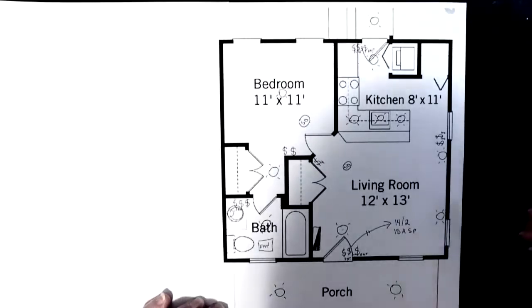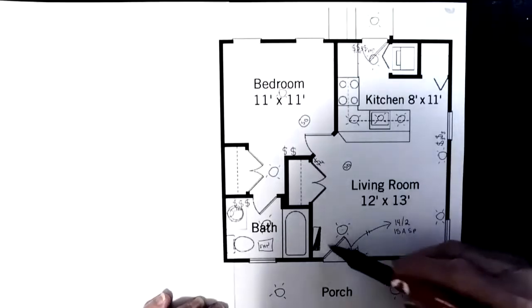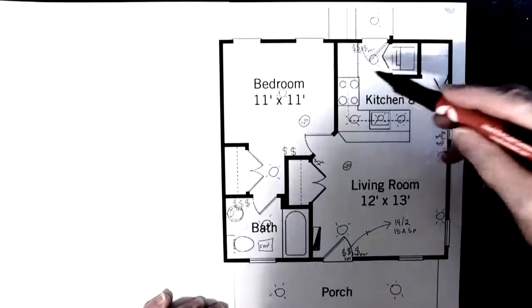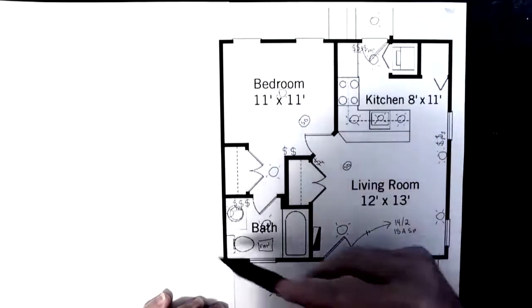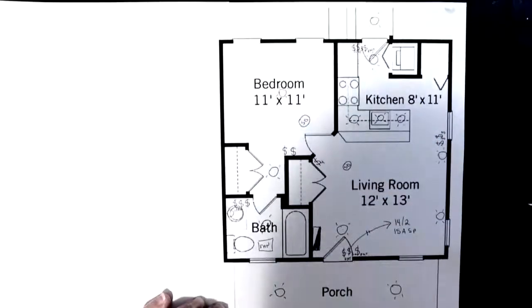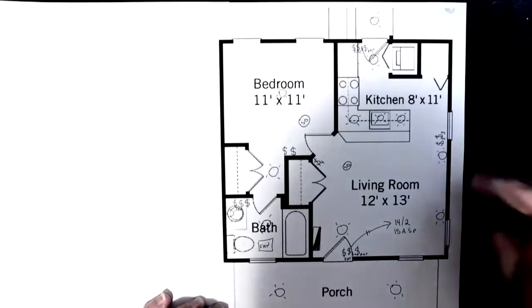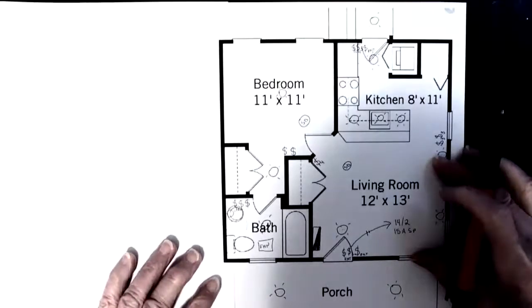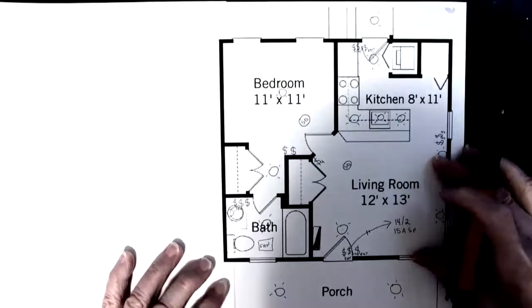Now I counted, and I have more than 12 in total. So I'm going to end up with two home runs. I'm going to split those home runs. I'm going to go from the panel this direction around the house, and then from the panel this direction around the house. And I'm not going to try to load up these circuits to their max. I'm just going to try to make the wire work, the length of wire work, to minimize my wire.